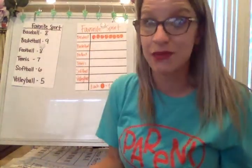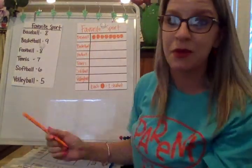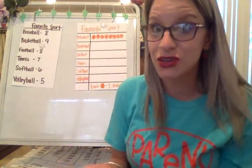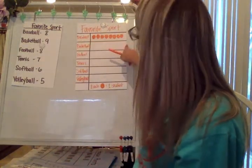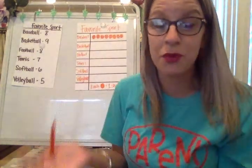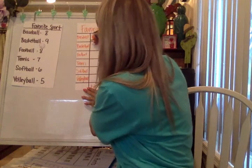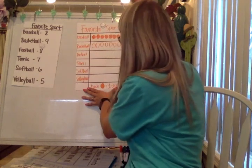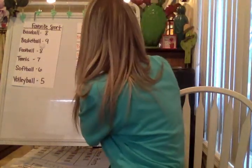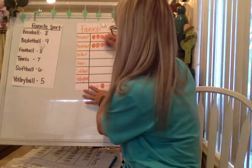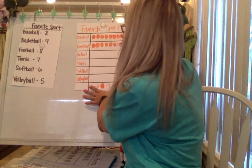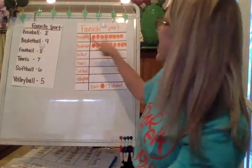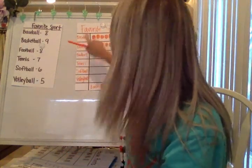When you're using symbols, you want to keep them about the same size. Moving on to basketball, I want to make those 9 circles about the same size, and I should see it goes farther than baseball because 9 is greater. So: 1, 2, 3, 4, 5, 6, 7, 8, 9. This is also a great time to recount what you just drew. I can already see that more people voted for basketball than for baseball.